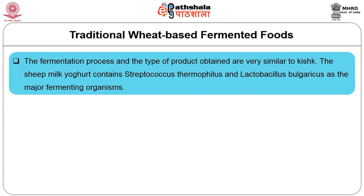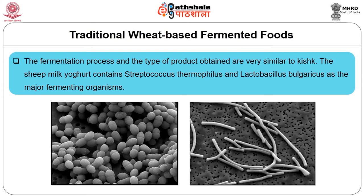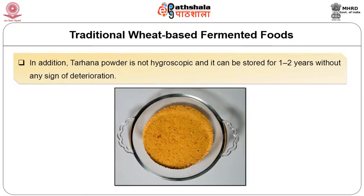The sheep milk yogurt contains Streptococcus thermophilus and Lactobacillus bulgaricus as the major fermenting organisms. Trahana has an acidic and sour taste with a strong yeasty flavour and is a good source of protein and vitamins. The practical nutritional importance of Trahana is the improvement of the basic cereal protein diet by adding dairy protein in a highly acceptable form. The low pH and low moisture content make Trahana a poor medium for pathogens and spoilage organisms. Trahana powder is not hygroscopic and can be stored for 1 to 2 years without any sign of deterioration.